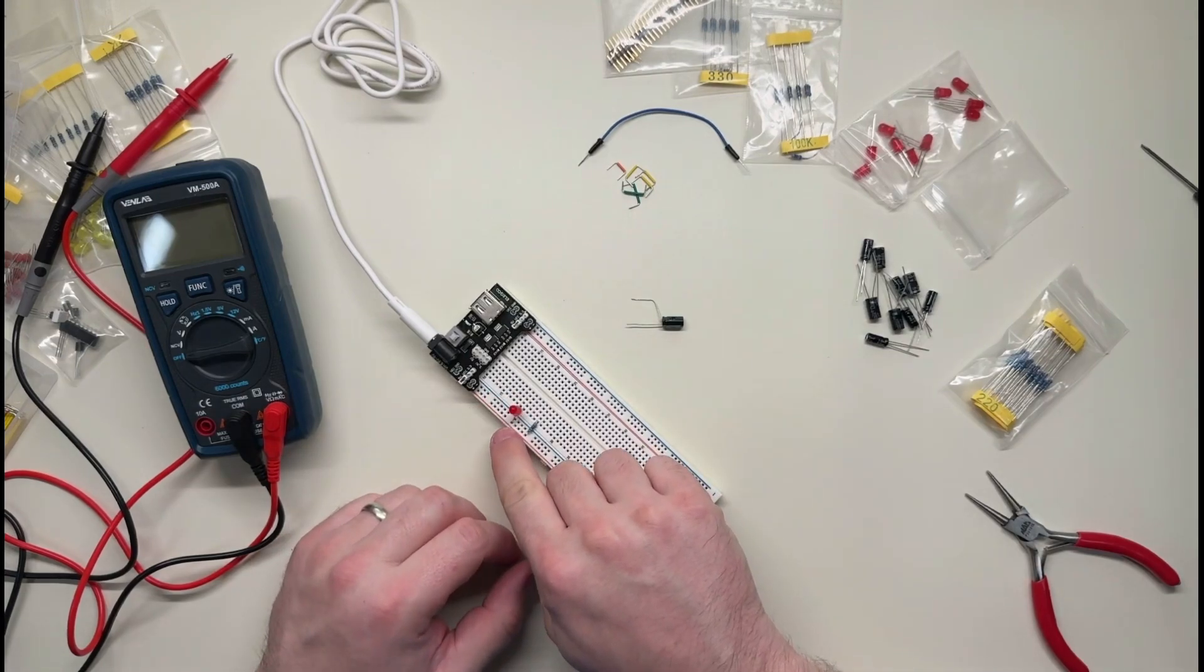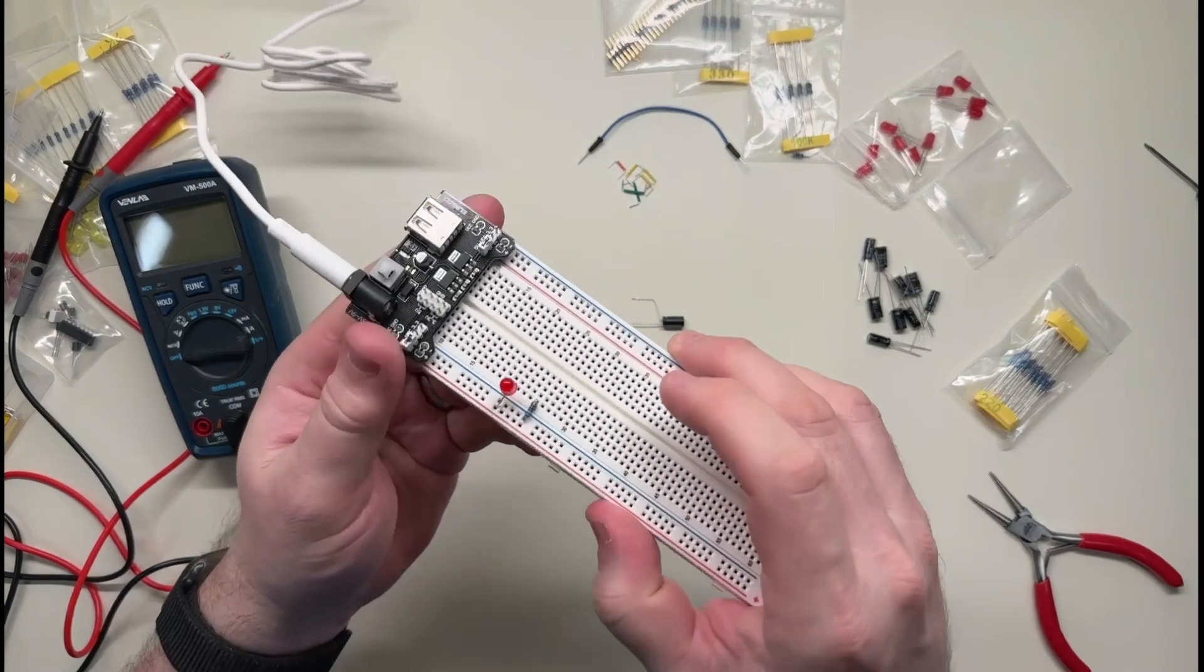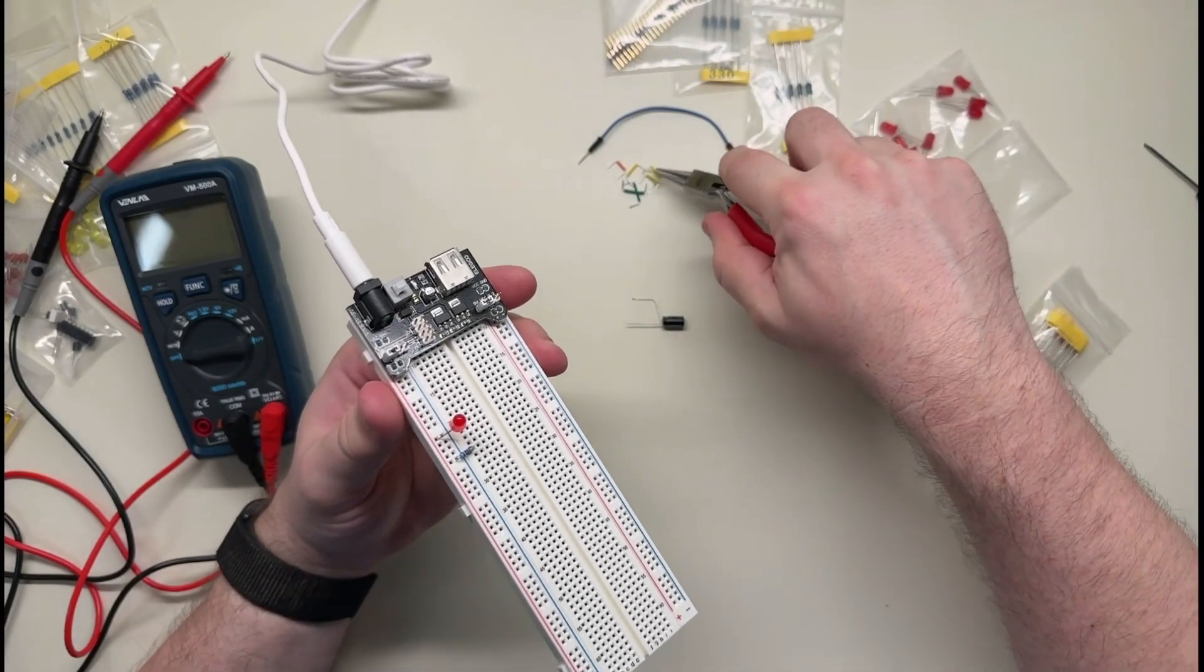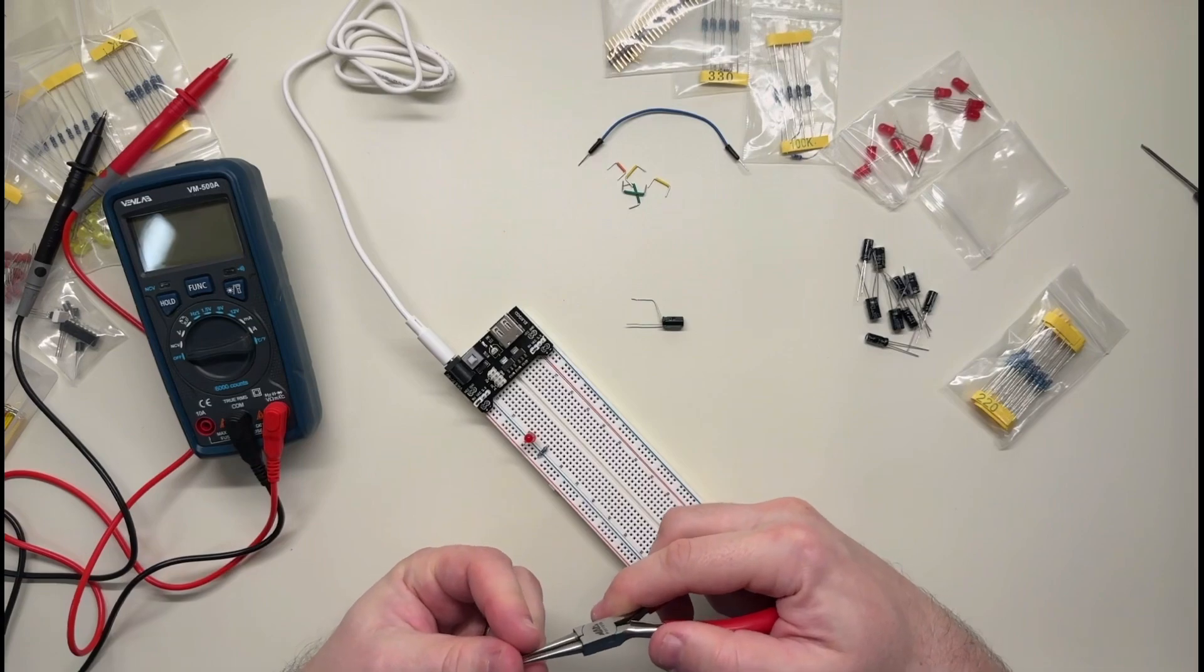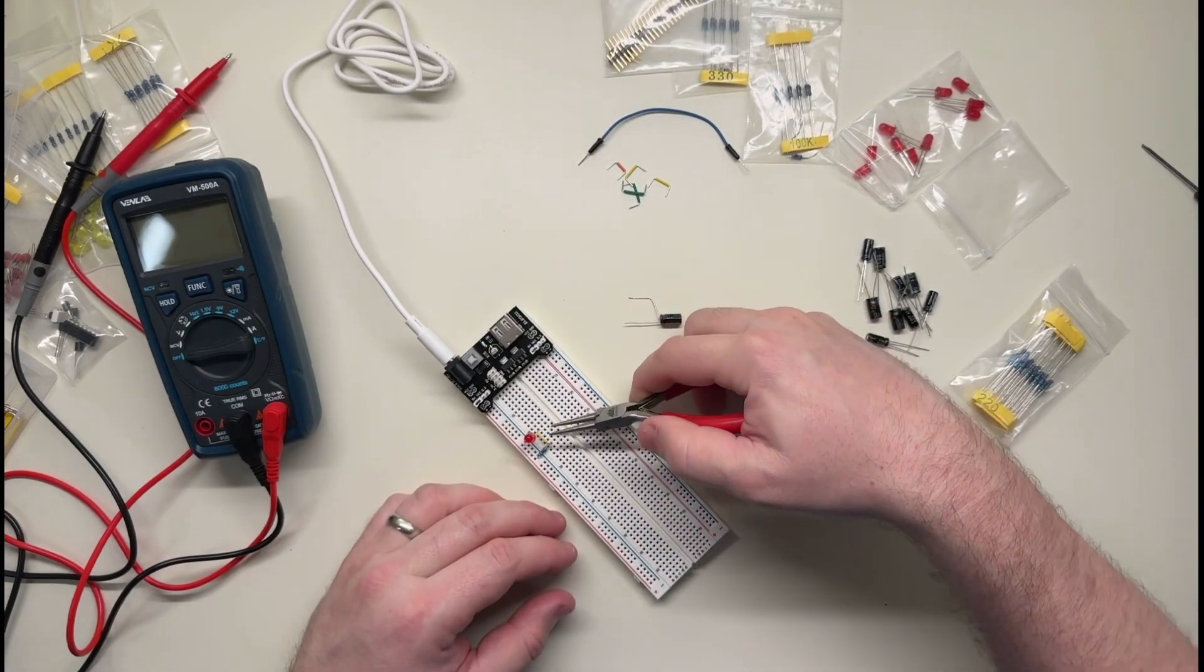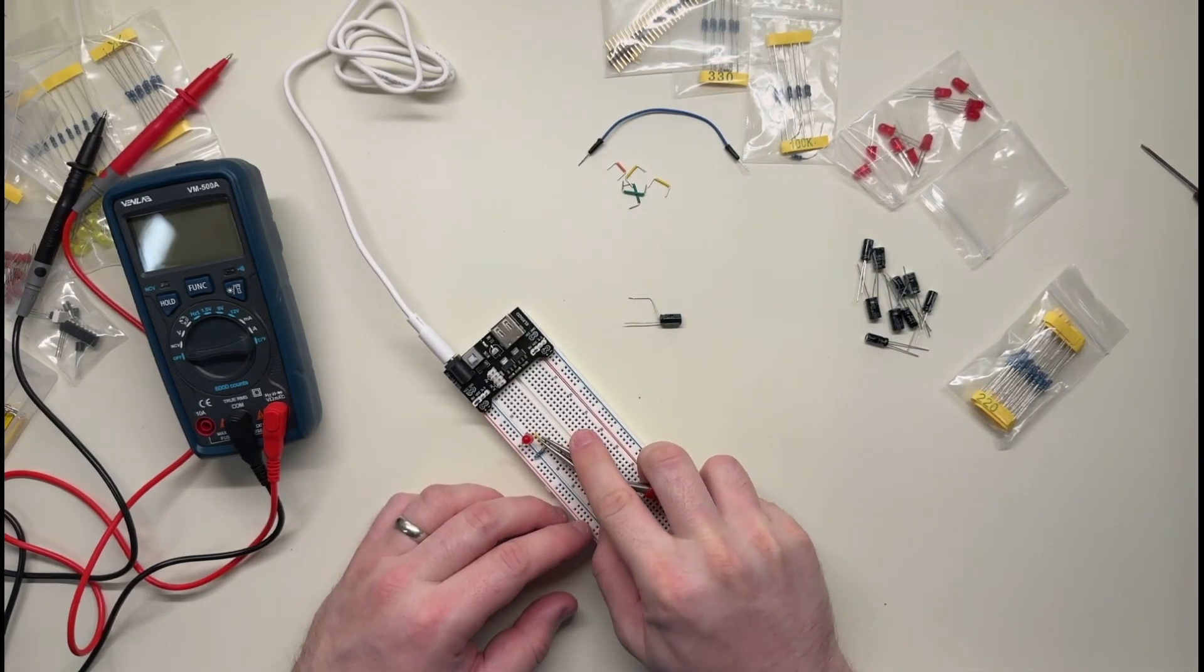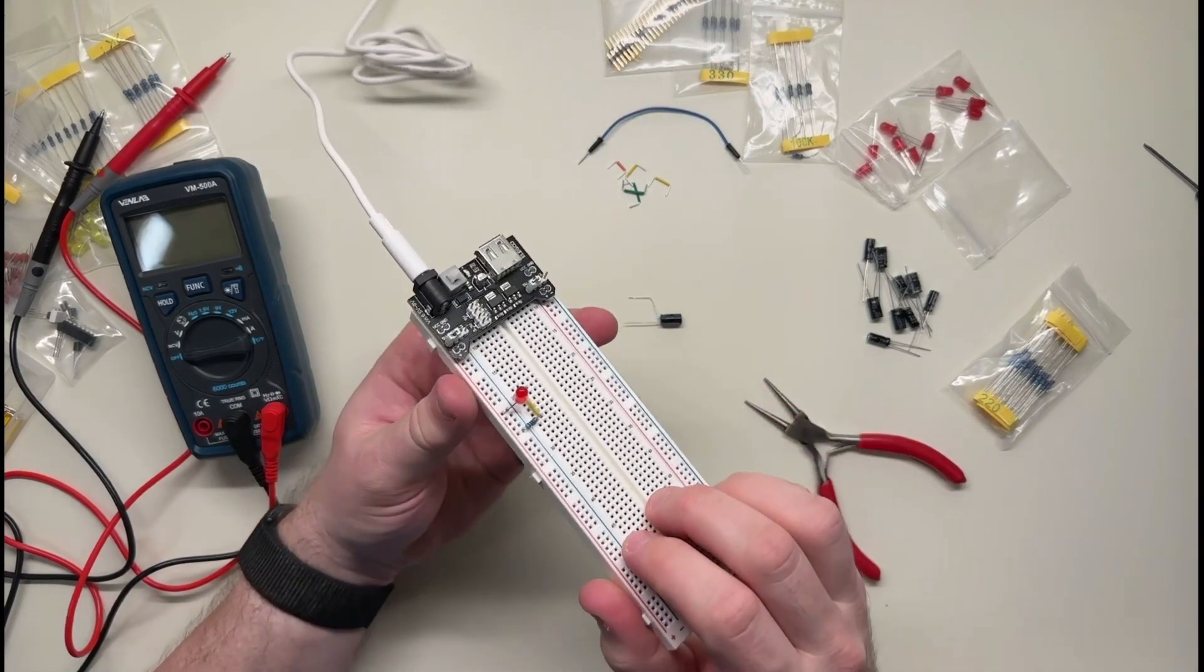You know, start with like a simple thing, build and run it and make sure it works. So I'm going to start with that. So we're going to have the plus side goes into the long side of the LED, and hopefully you can see that there. So I have to complete the circuit with one of these, hopefully this is the right size. Yeah that'll work.